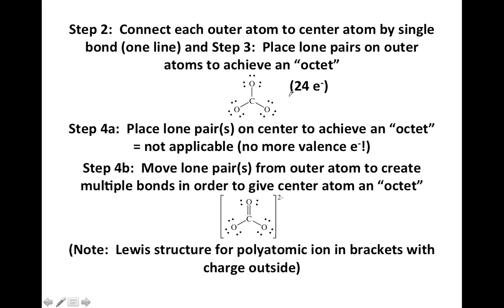Now we can move a little quicker. Step 2, we're going to connect the carbon in the center to three oxygens on the outside by a single bond, and then put lone pairs on the outside atoms, in this case oxygen, to achieve an octet on each oxygen. If you look at this oxygen here, there's a line coming off of it and three lone pairs.